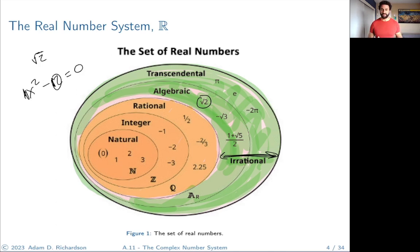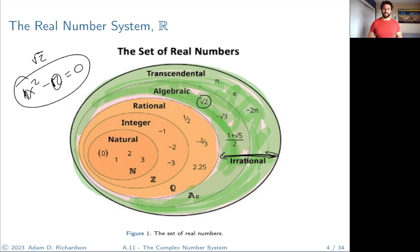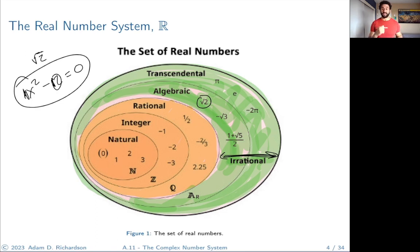In comparison, transcendental numbers cannot be written as solutions to a polynomial equation with rational coefficients. There's no polynomial like 2x³ + 3x² + x − 4 where pi is a zero — that's not possible. So we call them transcendental. This is the set of real numbers; it contains all of these numbers, and it's not the same as the set of complex numbers.